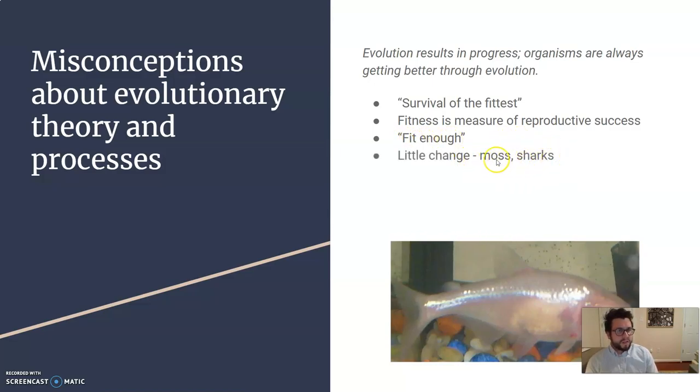And many organisms have not changed in millions of years. Moss and sharks have changed very little in their evolutionary history. And it's not a ladder or a chain in a single direction from simple to complex. It's more like a tree or a bush with so many different branches. And a lot of those branches end. A lot of organisms go extinct, even if they were so well adapted to their environment.